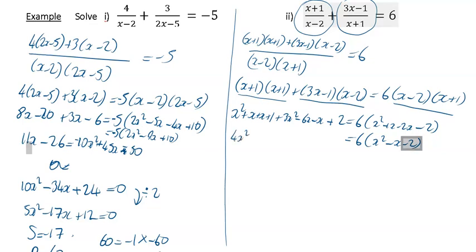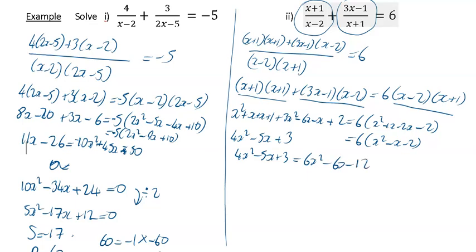Tidying up the left hand side you're going to have 4x squared, and then x plus x minus 6x minus x gives minus 5x, and then plus 3. So we've got 4x squared minus 5x plus 3 is equal to 6x squared minus 6x minus 12. Bringing it all to the right hand side gives 2x squared minus x minus 15 equal to zero.